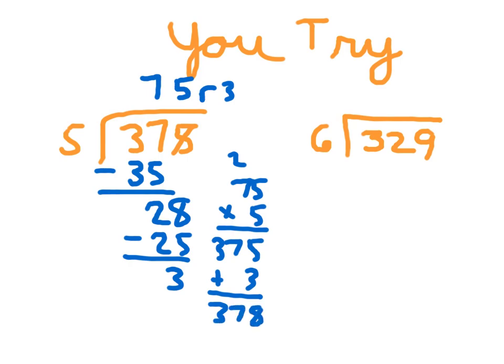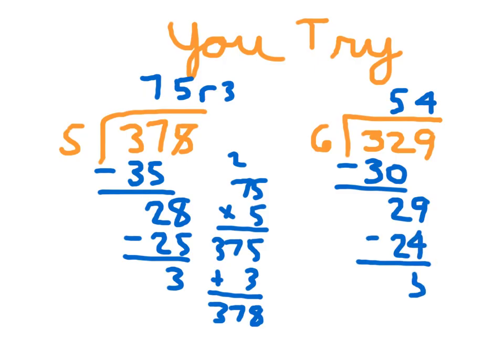329 divided by 6. 6 cannot go into 3. 6 can go into 32. 5 whole times. So again, that 5 should go right over that 2. 5 times 6, which is 30. 32 minus 30, which is 2. We bring down the 9. 29 divided by 6, which is 4. 4 times 6 is 24. And 29 minus 24 is 5. So our remainder is 5.